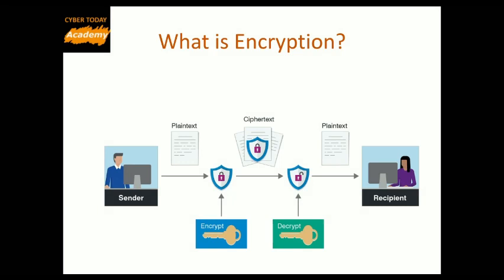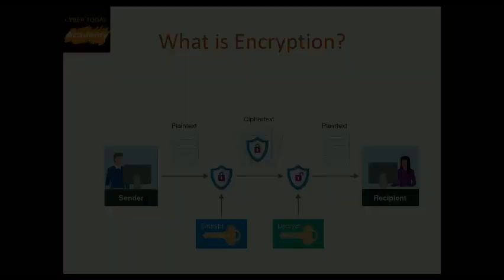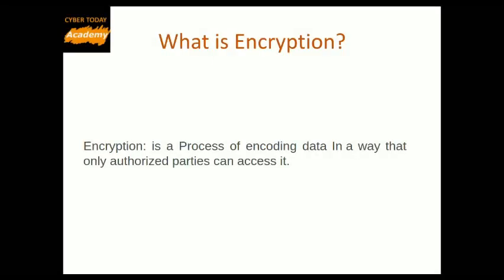Encryption is a way of scrambling data so that only authorized parties can understand the information. In technical terms, it is the process of converting human readable plaintext to incomprehensible text, also known as ciphertext. In simpler terms, encryption takes readable data and alters it so that it appears random. Encryption requires the use of a cryptographic key, a set of mathematical values that both the sender and the recipient of an encrypted message agree on.